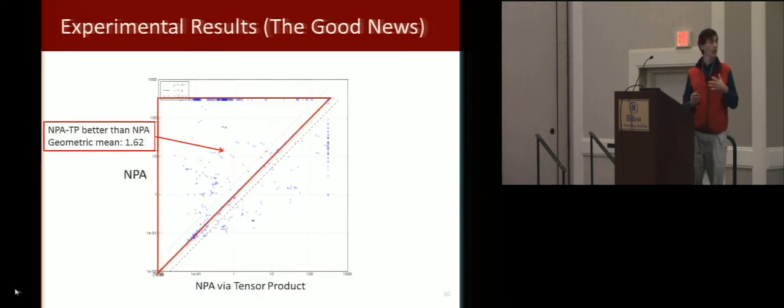So how does this work? Well, there's good news and bad news. So here we take the Esparza method, Newtonian program analysis, and our method being in the upper triangle means that our method is better. It's better by a geometric mean. So it's a speed up factor of 1.62. So that's pretty good.